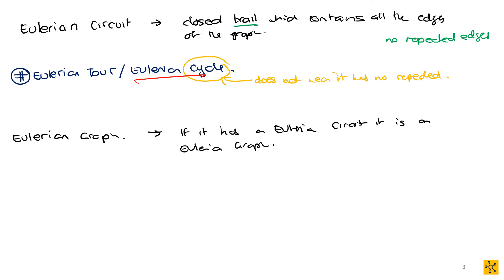Now that we've done the definitions, let's move on to some theorems that involve Eulerian graphs. You're going to want to know some of the characteristics of an Eulerian graph, because understanding those characteristics is going to make you understand why you even care about it in the first place.